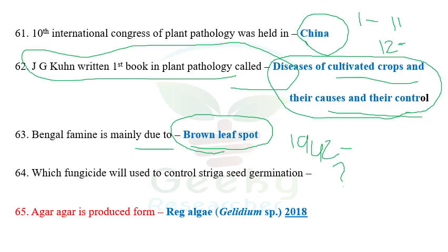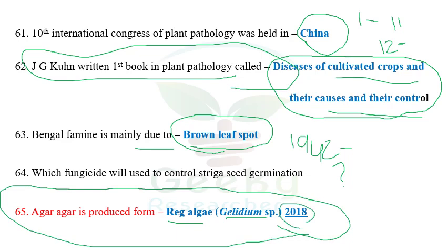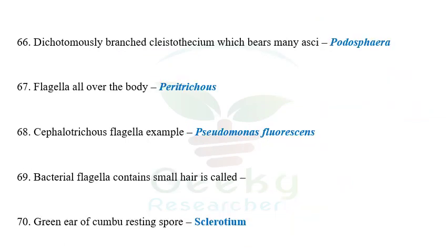Note: the question about agar agar was from 2018, not 2019, but is included for completeness. Agar agar is produced from red algae — Gelidium species. This is a very important question; it appeared in both 2018 NET 1 and 2018 NET 2 question papers. The next question: dichotomously branched cleistothecia bearing many asci — remember, cleistothecia with many asci is Podosphaera, whereas cleistothecia with a single ascus is Microsphaera.